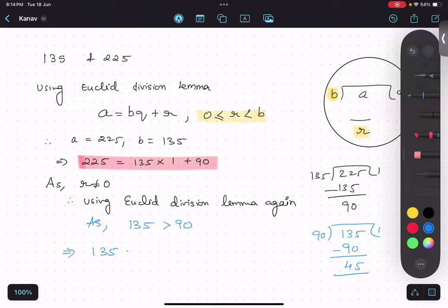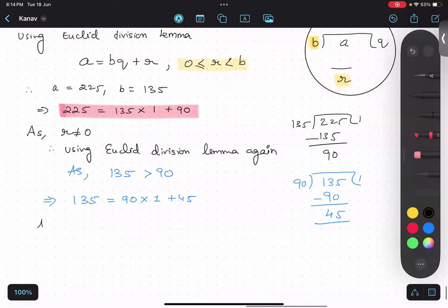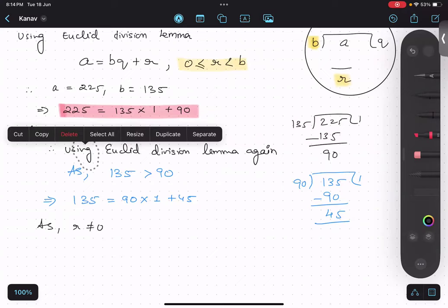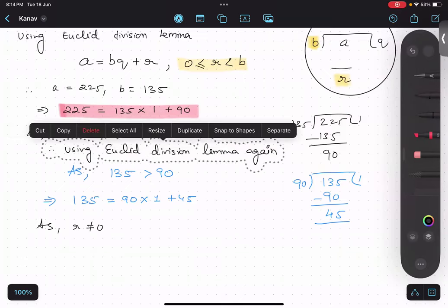So we'll write again: 135 equals to 90 multiplied by one plus 45. And we will again write as the remainder is not equal to zero, so using Euclid division lemma again.